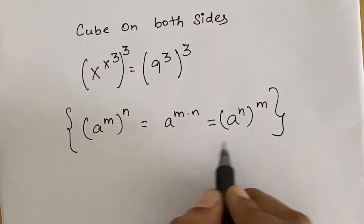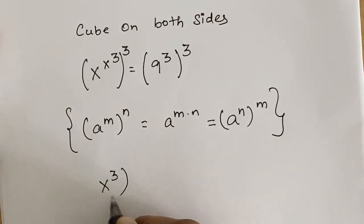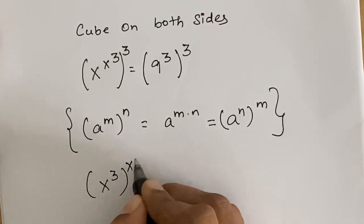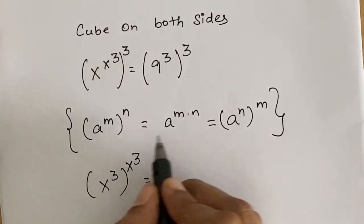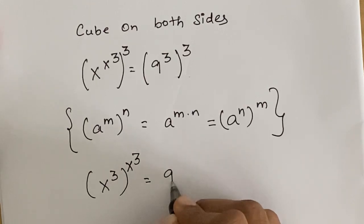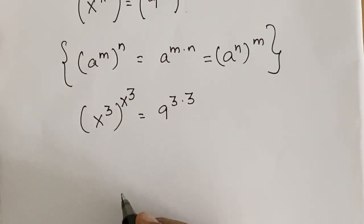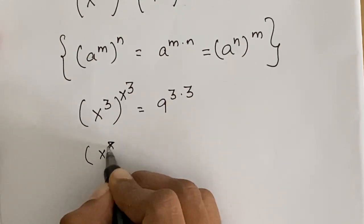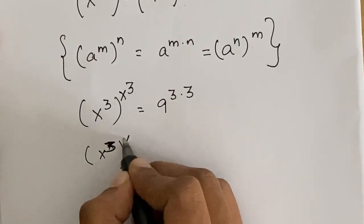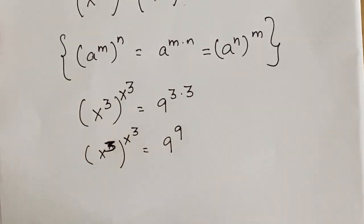Now let us apply this formula. By exchanging the exponents, we get x cubed to the power x cubed on the left side. On the right hand side, multiplying the exponents gives us 9 to the power 3 times 3, so we get x cubed to the power x cubed equals 9 to the power 9.